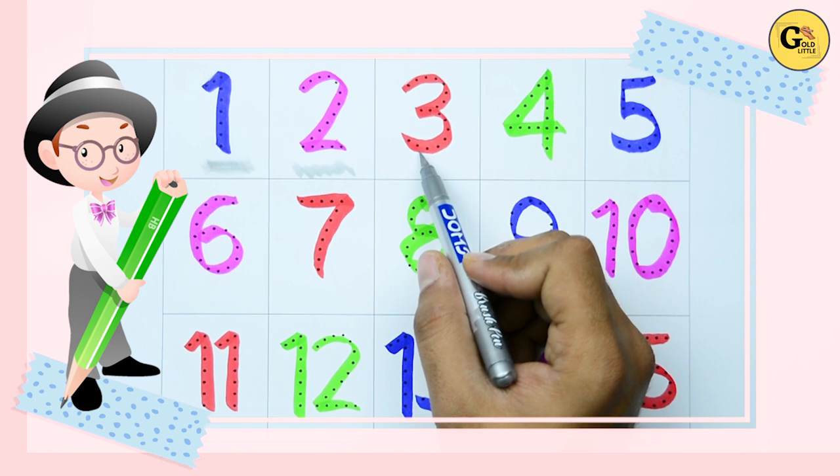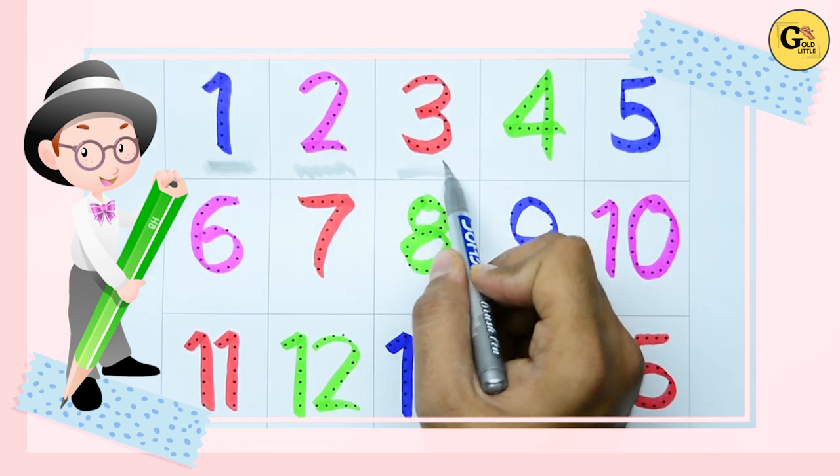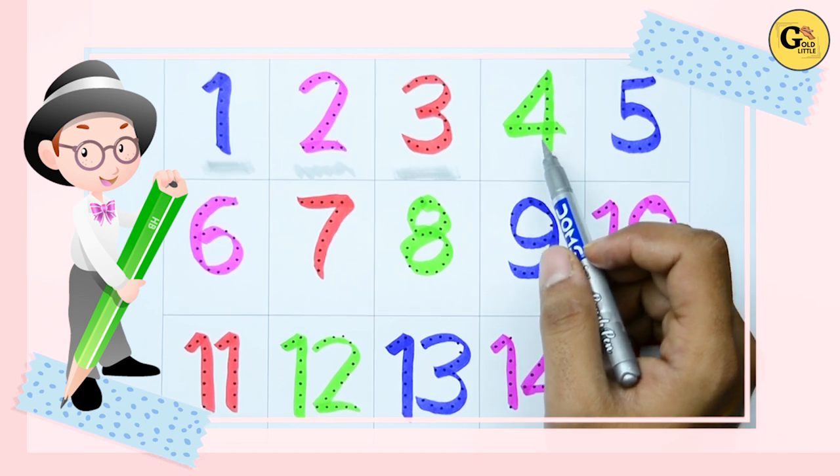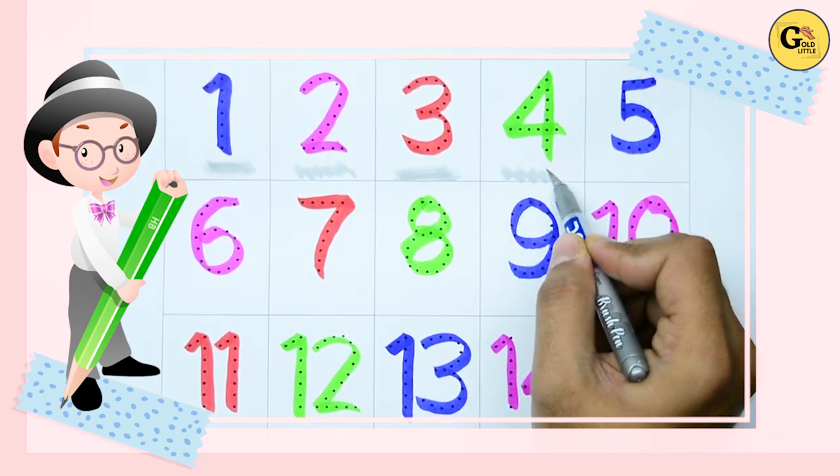3. Which color? Red color. Right. Green color. Which number is this? Yes, it's 4.